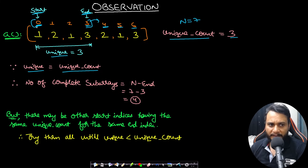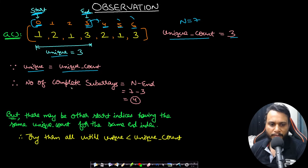So if you find a subarray from a given start to end having the unique count equal to the total unique count of the array, then from the same start point you can extend to n+1, n+2, n+3 and so on till the end. The number of complete subarrays with the same start point equals n minus end, which is 7 minus 3 = 4, covering 0 to 3, 0 to 4, 0 to 5, and 0 to 6.